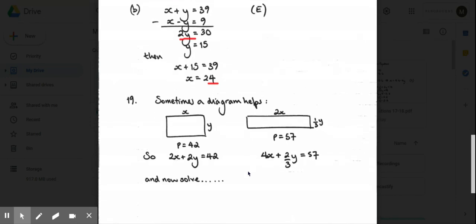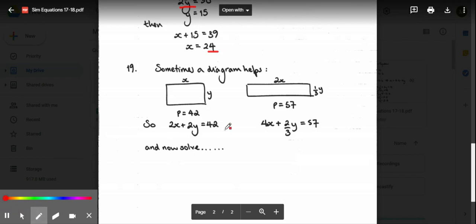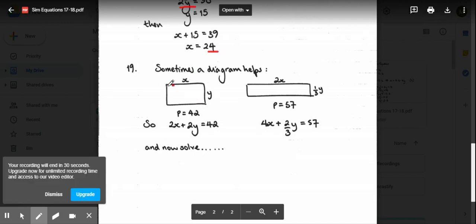I'm going to help by starting you off on question 19, and I would say sometimes a diagram helps, particularly when they're talking about areas and perimeters. You're told the first rectangle which has dimensions x and y has a perimeter of 42, so I've drawn this rectangle. I've drawn the other rectangle 2x times one-third y because you're told those are dimensions.